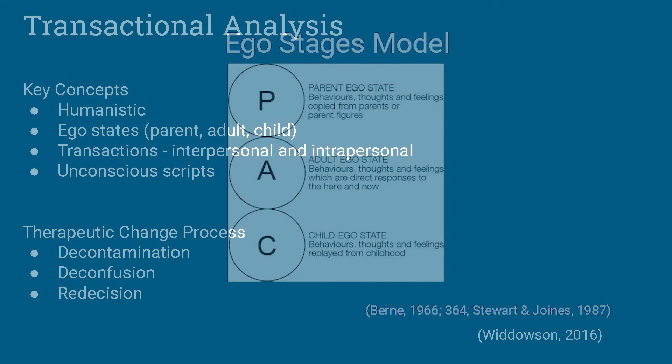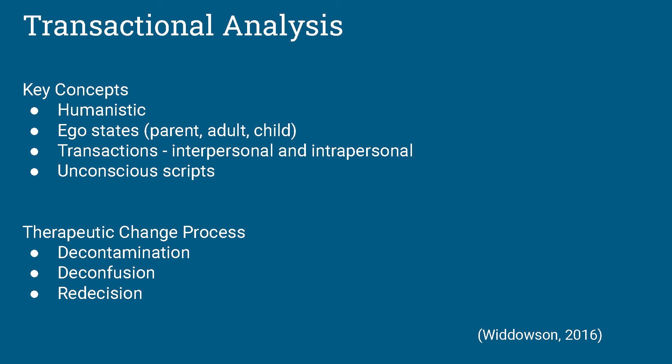TA is a humanistic approach based on ego states and transactions. Transactions are defined as a basic unit of social intercourse. There are two types: intrapersonal and interpersonal. An intrapersonal transaction is one a person has with themselves — for example, telling yourself that you look amazing in your new outfit. An interpersonal transaction is between two or more people, such as smiling at each other in passing or calling a friend for moral support.